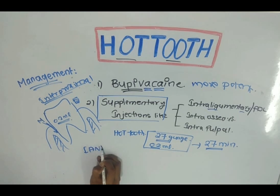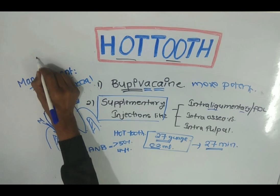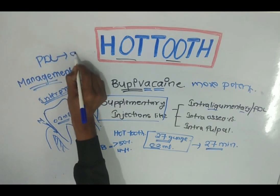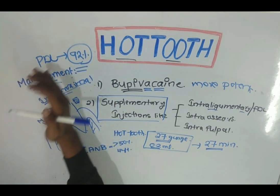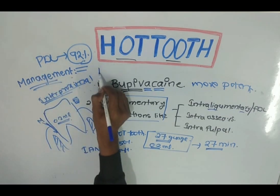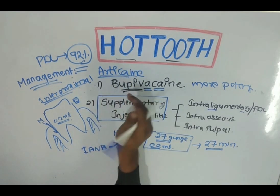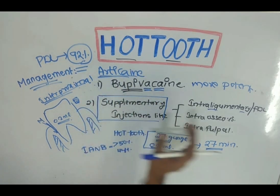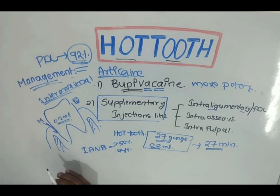IANB has a success rate of less than 50% — to be precise, 44%. So you need to give a PDL injection which has a success rate of 92%. PDL or intraligamentary injection has a success rate of 92%, especially when you use articaine. Articaine should be used for the intraligamentary injection and you will get 92% success in achieving anesthesia.